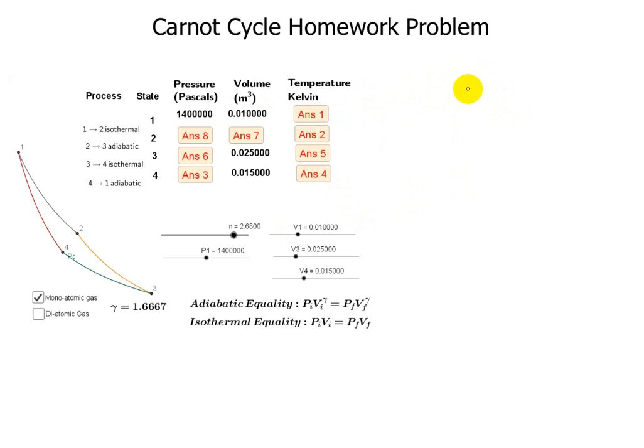To find temperature when you're given pressure and volume for an ideal gas, we simply have PV equals nRT, so we're just going to plug in the numbers. T equals 1400000 times 0.01 cubic meters divided by 2.68 moles times the gas constant 8.3144. And that will give us a temperature of 628.29 Kelvin.